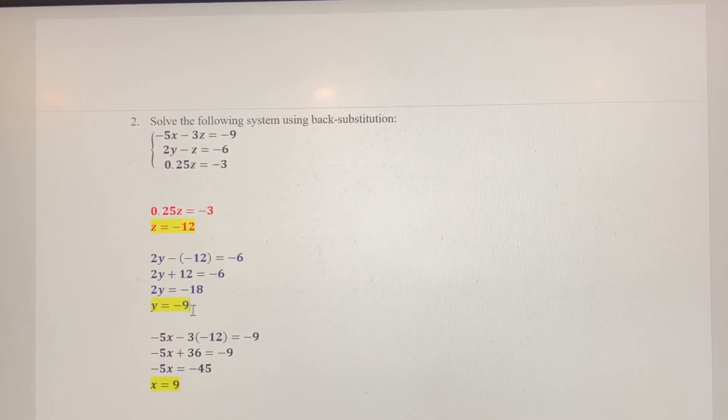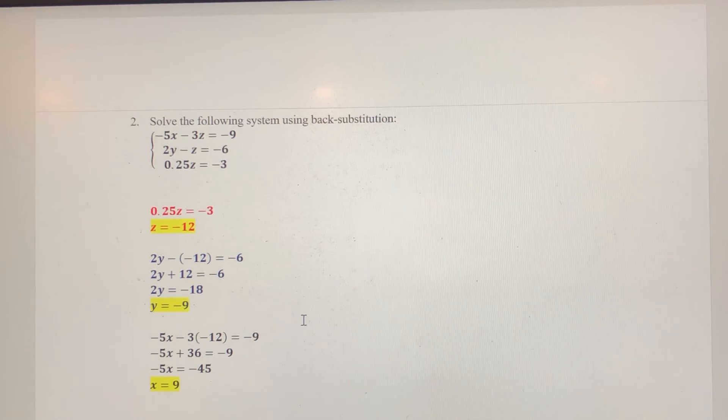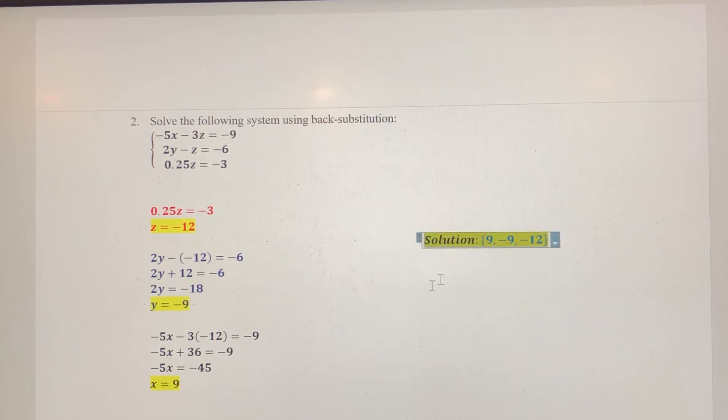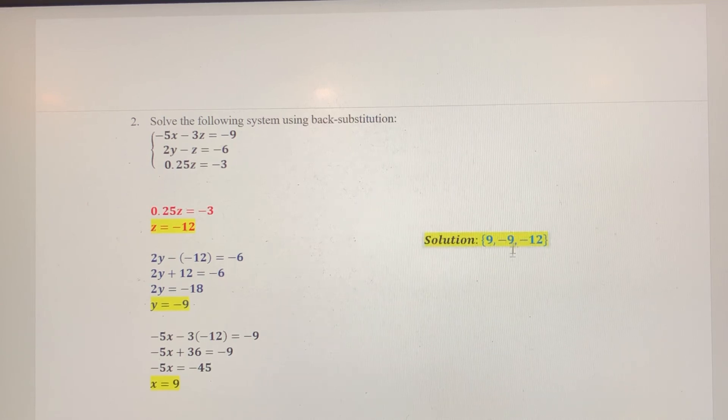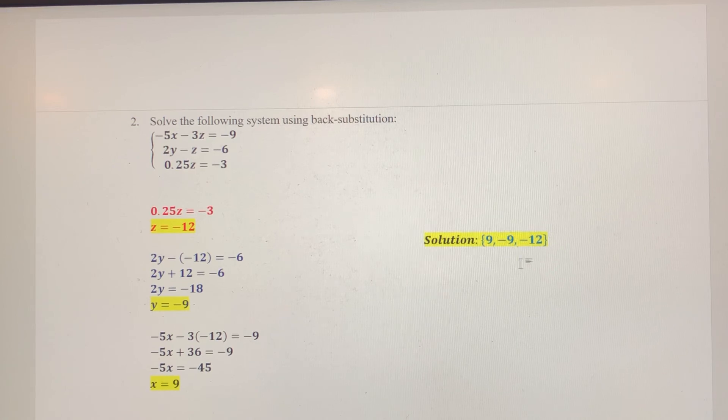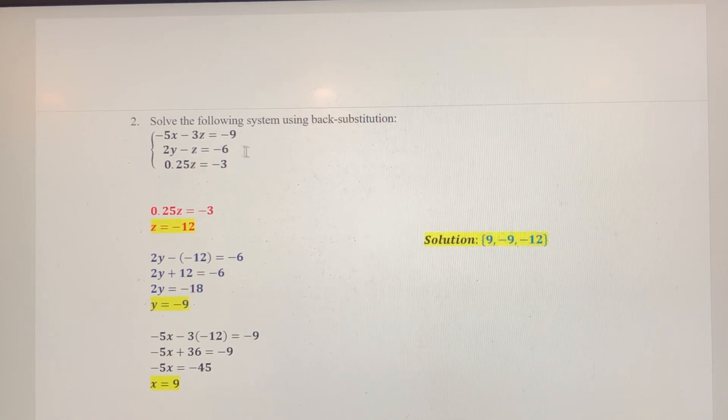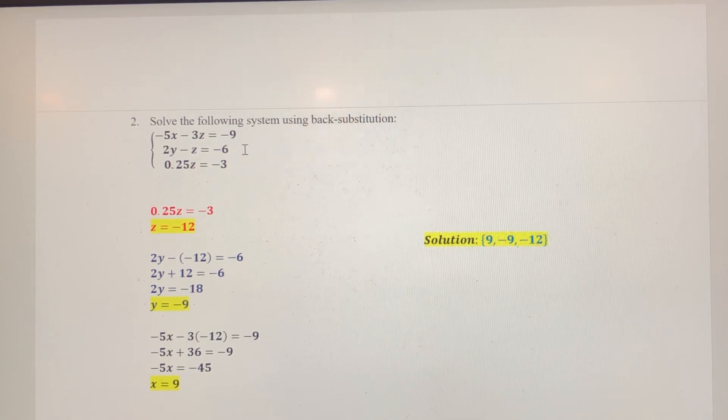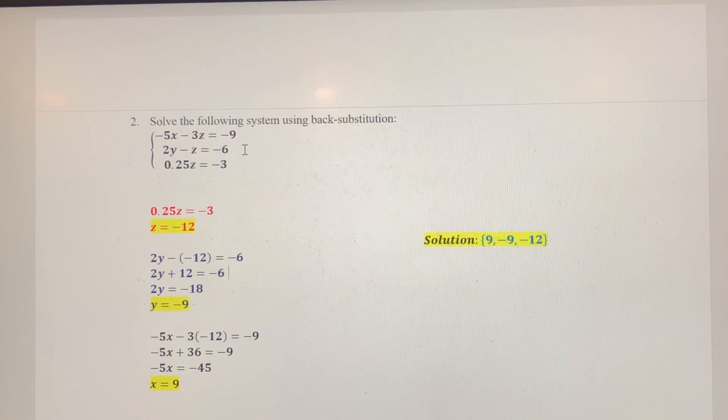Again, we want to write our solution as a trio, an ordered trio, excuse me, in alphabetical order. So, my X value was 9, my Y value was negative 9, and my Z value was negative 12. So, that's the solution of this system of three linear equations. That's how you solve a system in triangular form using back substitution.